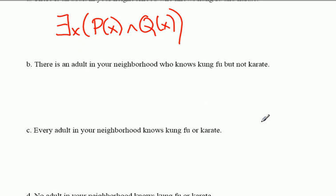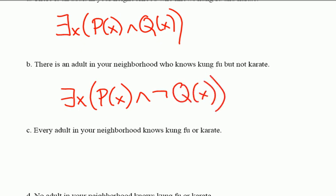Here's the second one. There is an adult in your neighborhood who knows kung fu but not karate. So there exists an x. And what about that x? Well, that person knows kung fu but not karate. We don't have a symbol for but, of course. But really means and not. So I'm going to put and not Q(x).